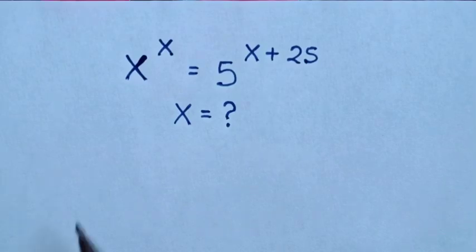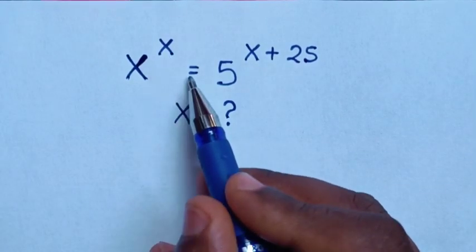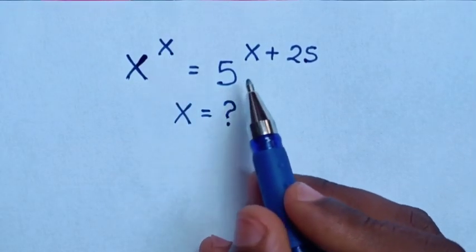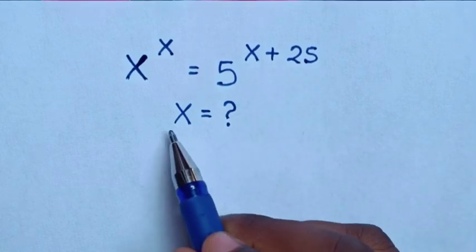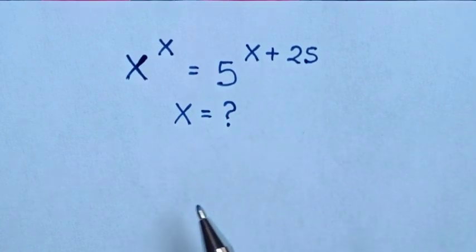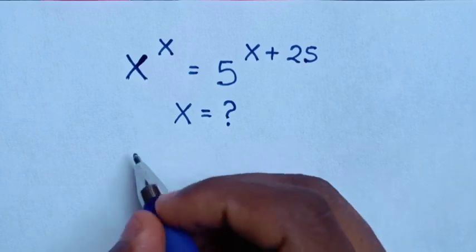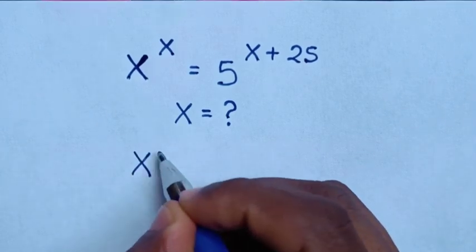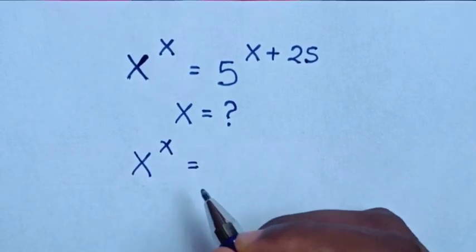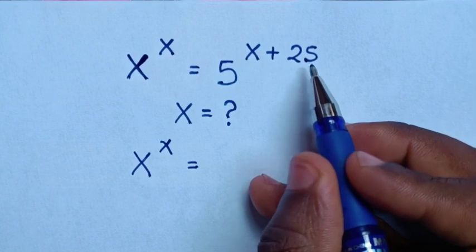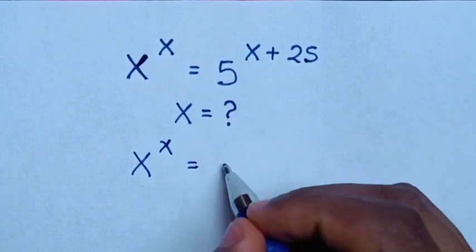Hello. How to solve x power of x is equal to 5 power of x plus 25 — to find the value of x from this equation. So from x power of x is equal to 5 power of x plus 25, this is the same as 5 power of x.